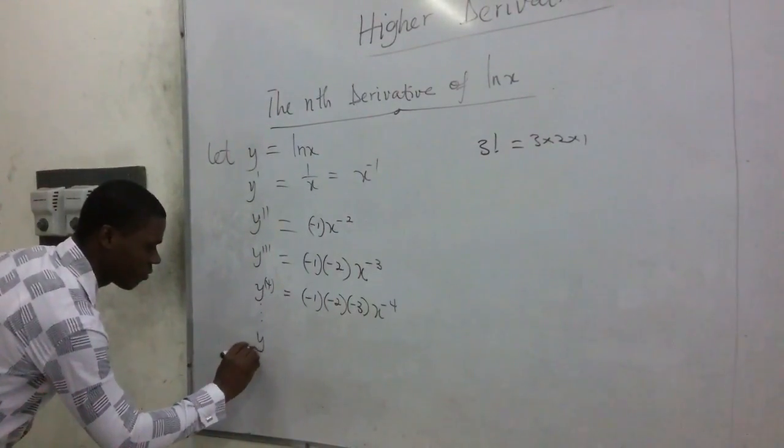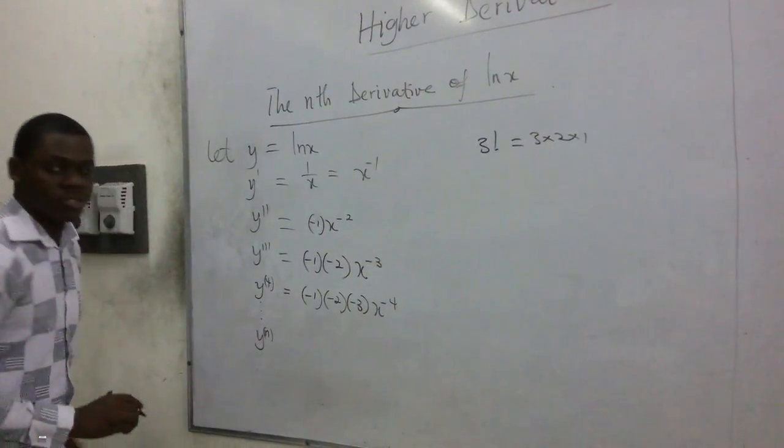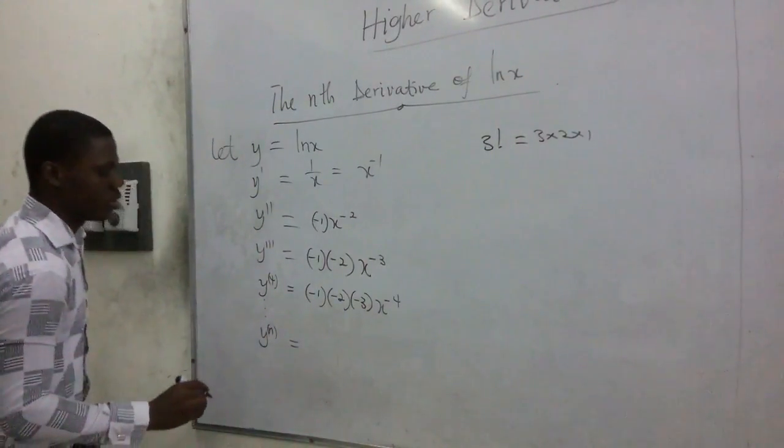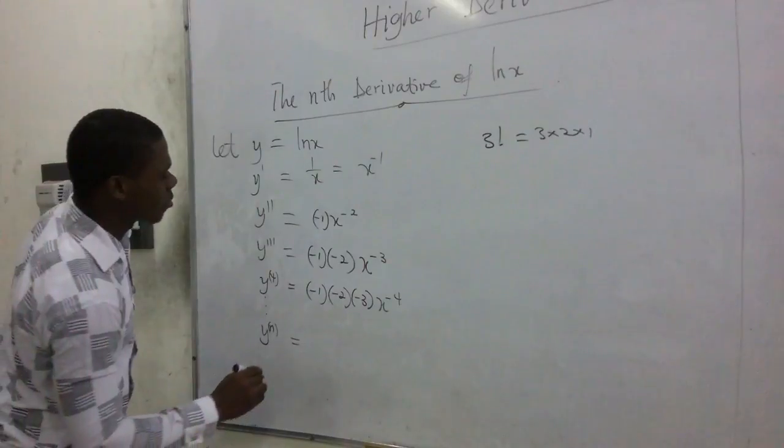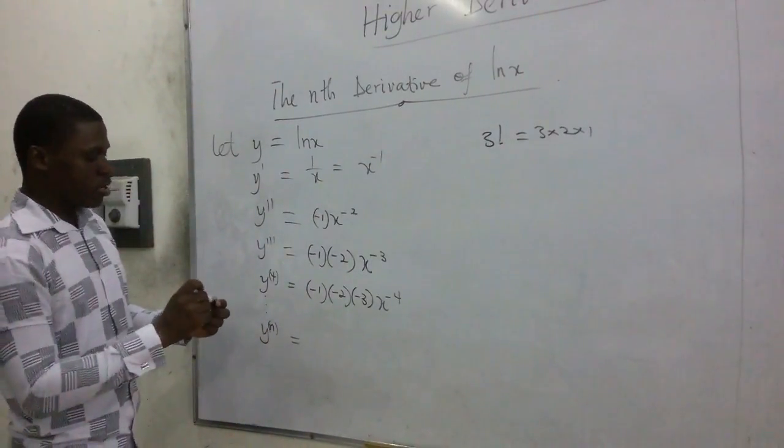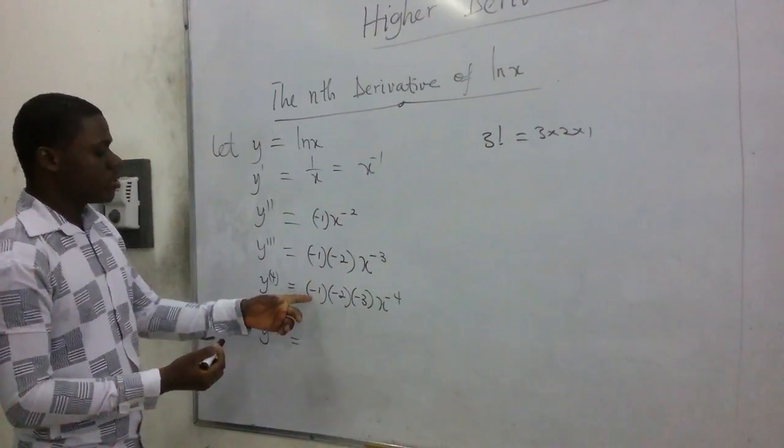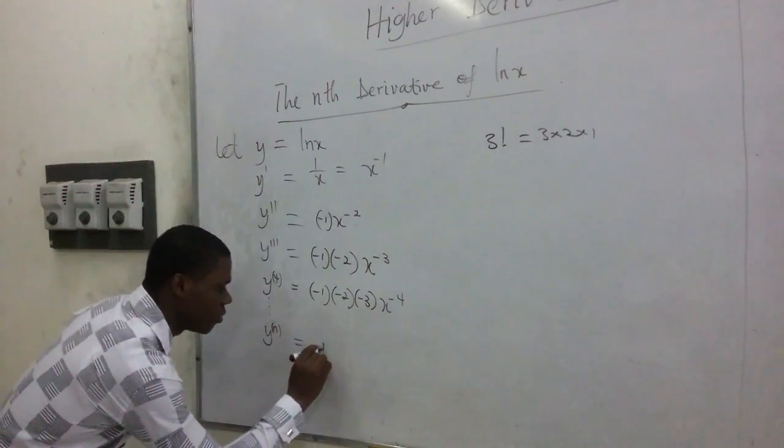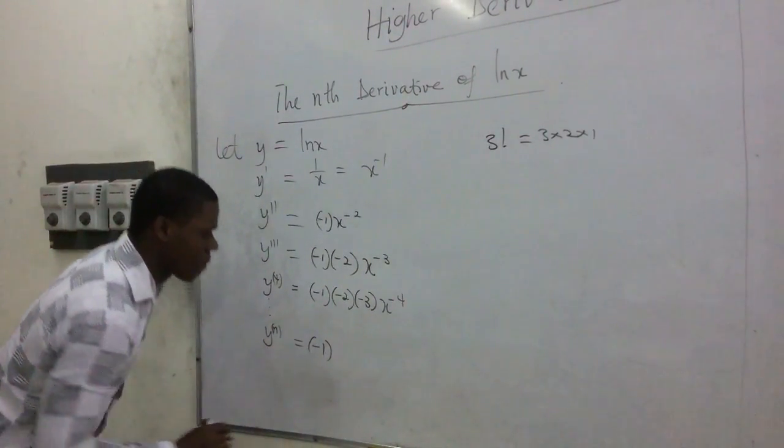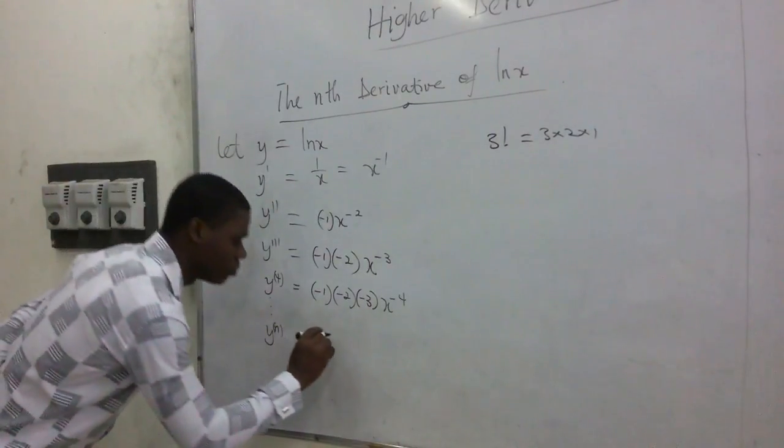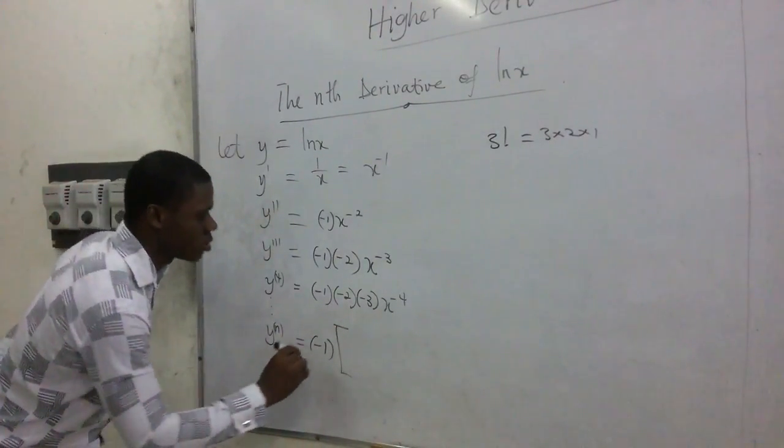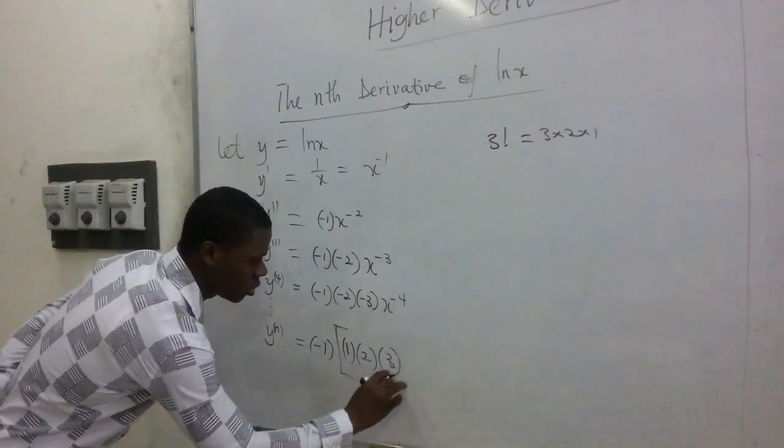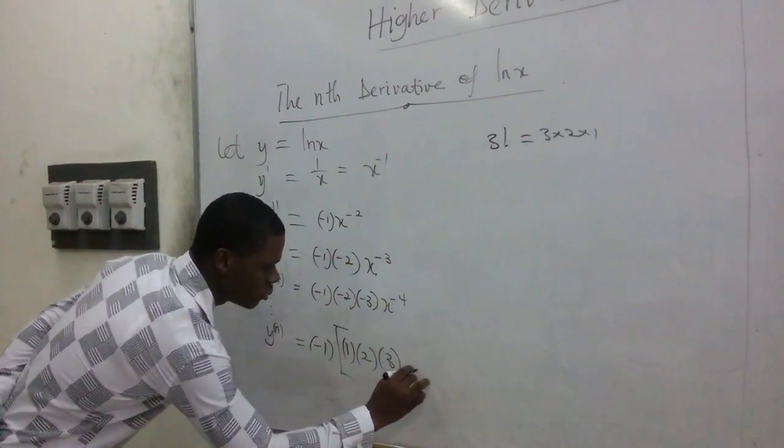When we look at this particular one, we can get to the nth derivative. And if you look at the nth derivative, we can move and say that's okay. We have observed that at every point in time, the signs are changing. So we can have negative 1 here. We then bring the brackets. We bring the brackets. We have 1, 2, 3, and if this continues.